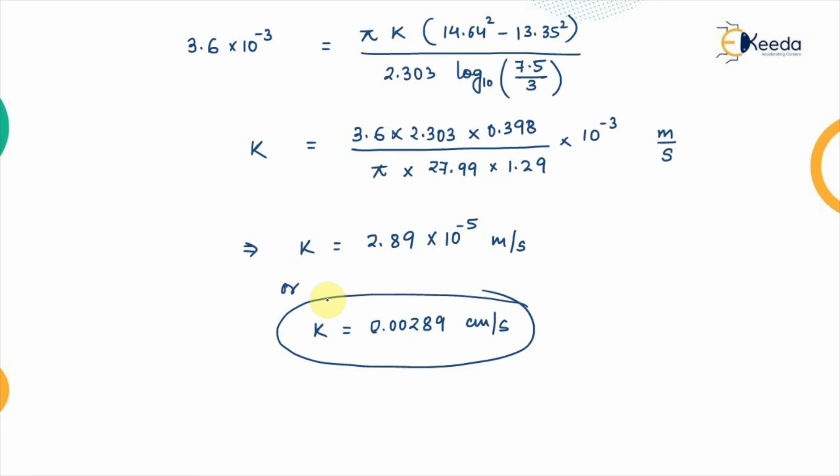Solving this out, the value obtained is k = 2.89 × 10⁻⁵ m/s. Converting to centimeters per second by multiplying by 100, we get k = 0.00289 cm/s. That is the coefficient of permeability of the given soil.